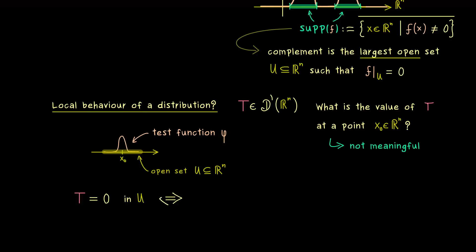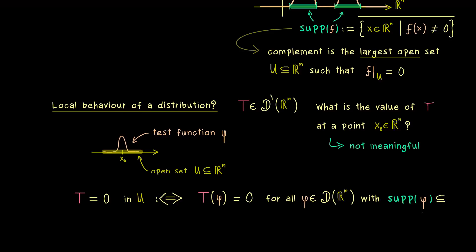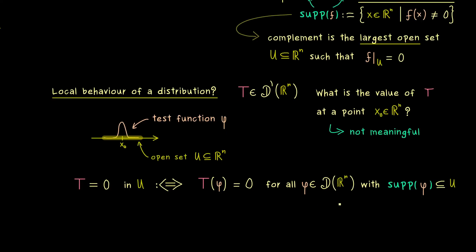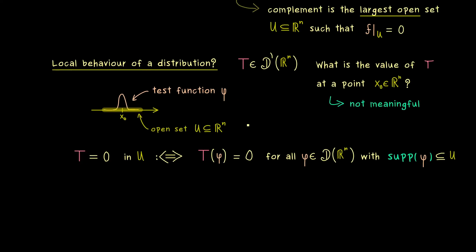We define what it means for T to vanish on U by using test functions: we apply T to any test function φ that has support inside this open set U, and if we always get out zero, then T vanishes on U. So we use many test functions but always get zero — it does not matter how large the test function's values are, because we only talk about the value zero for the distribution anyway.